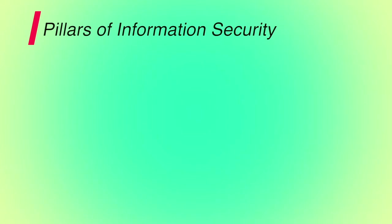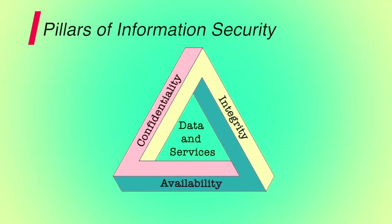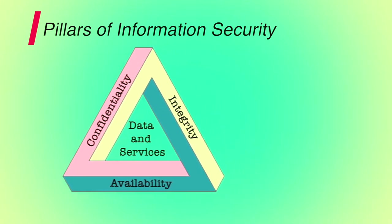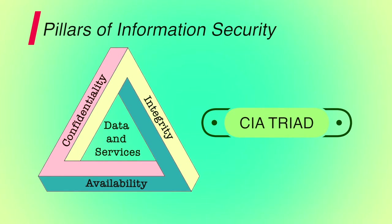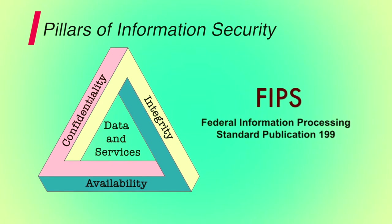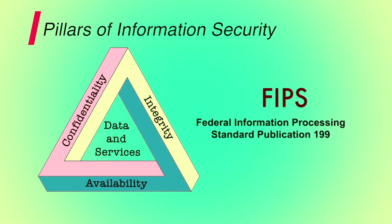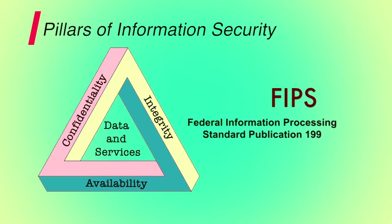Information security rests on three main pillars: confidentiality, integrity and availability. These three pillars form what is often referred to as the CIA triad. The three concepts embody the fundamental security objectives for both data and for information and computing services. FIPS PUB 199 provides a useful characterization of these three objectives in terms of requirements and the definition of a loss of security in each category.